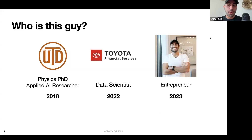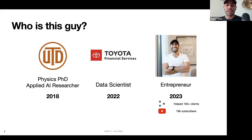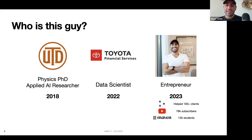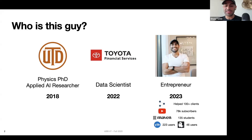A year into that role, I decided to go out on my own and become an entrepreneur. I started doing AI consulting and helped over a hundred clients. I've also made educational content on YouTube and Medium, I teach an AI class on Maven with over 135 students, and I've been building my own AI products — two down out of a goal of twenty.